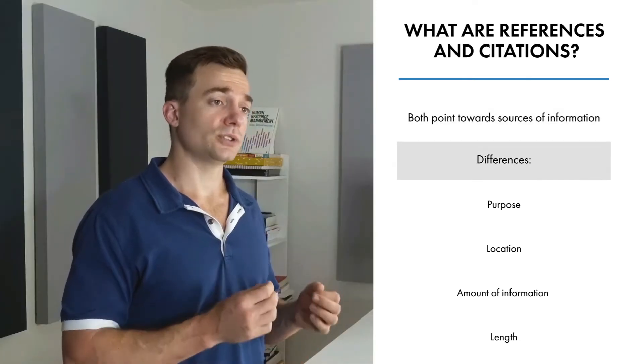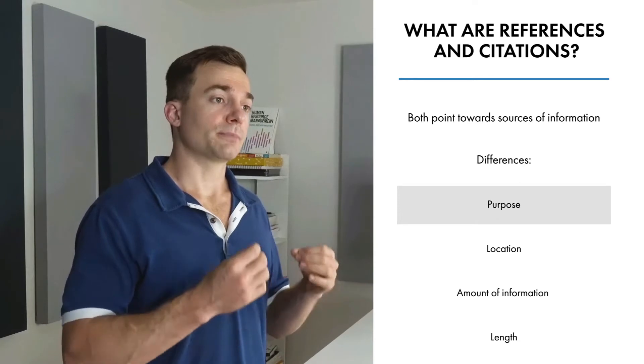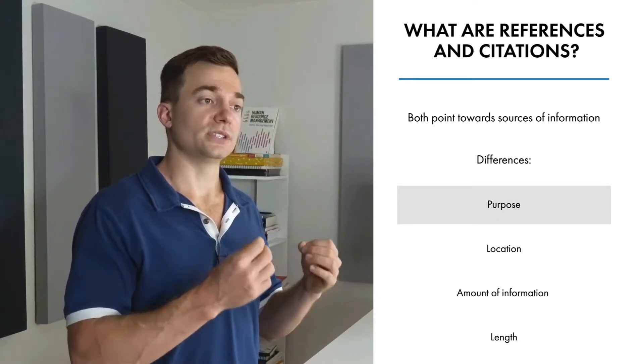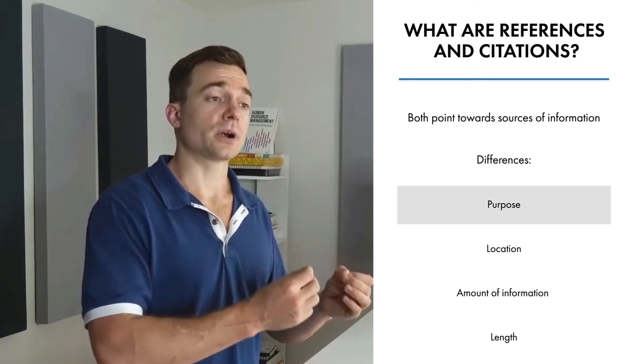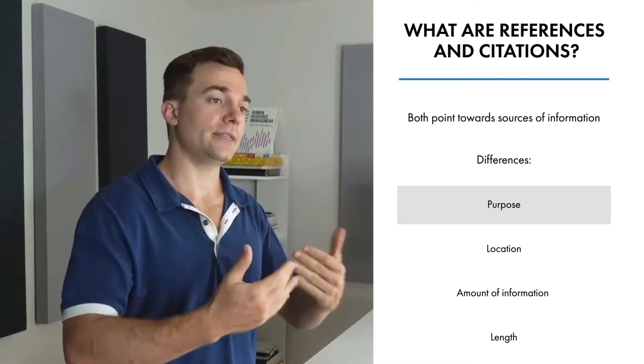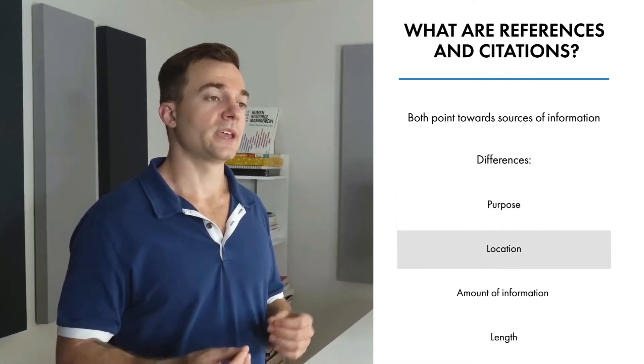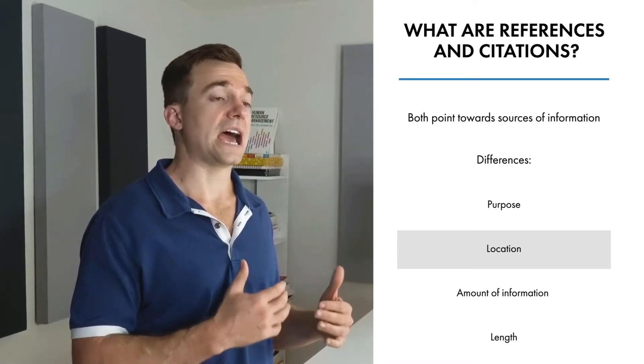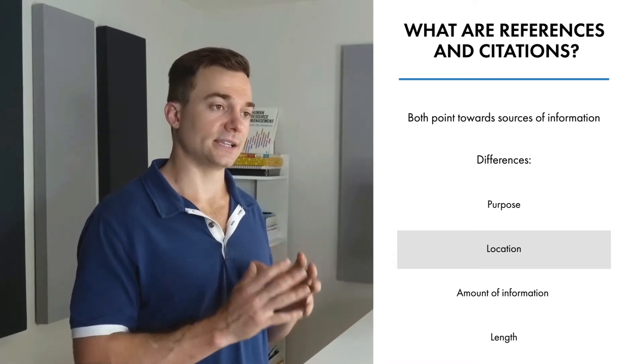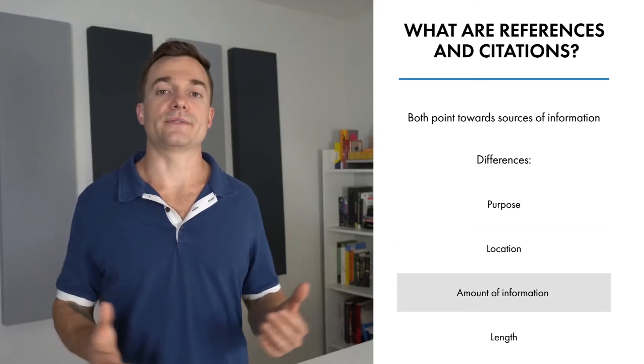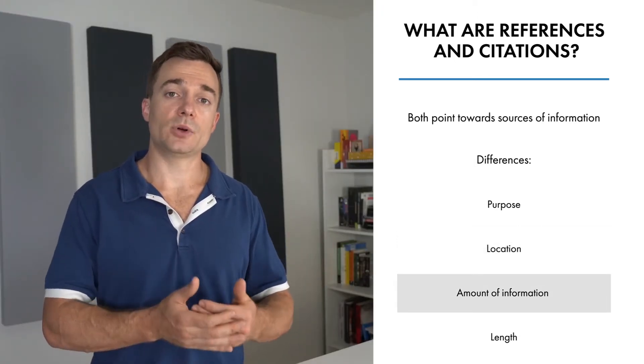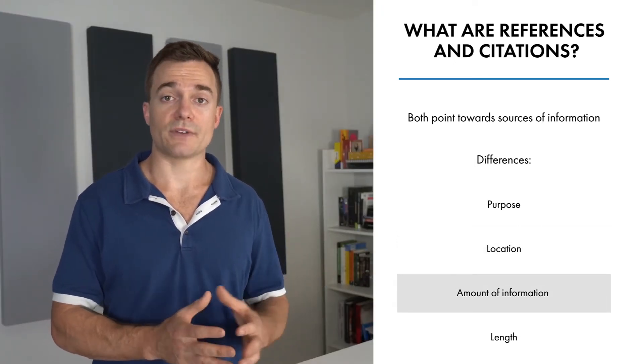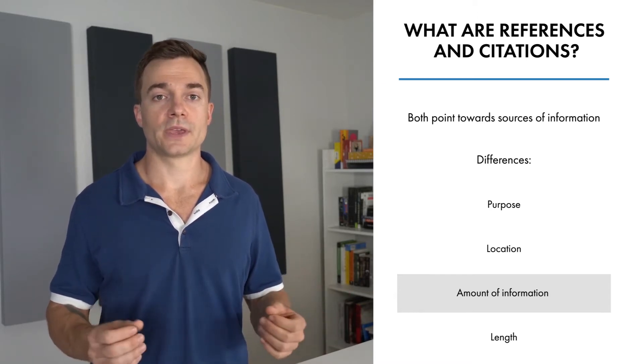The differences between the two are: purpose - the purpose of a citation is to point to additional information, whereas the purpose of a reference is to supply that additional information. Location - citations appear within the main text, whereas references are added towards the end of the main text as a list. Amount of information - citations give minimal information, whereas references provide all the relevant details.